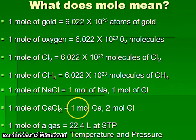For one mole of calcium chloride, there would be one mole of calcium ions and two moles of chloride ions.